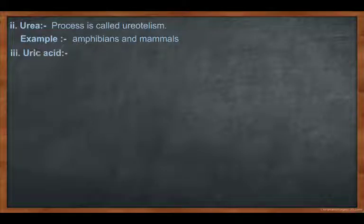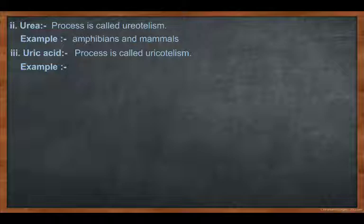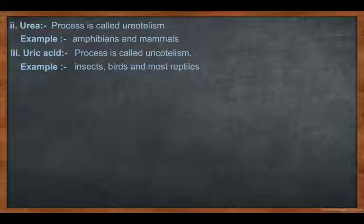Uric acid — those organisms which release or excrete uric acid as excretory product are called uricotelic, and this process is called uricotelism. Examples include birds — birds only excrete uric acid — as well as insects and most reptiles. That is why their urine is in solid form, commonly called pits, because uric acid is released from the body in solid form with very low water content.